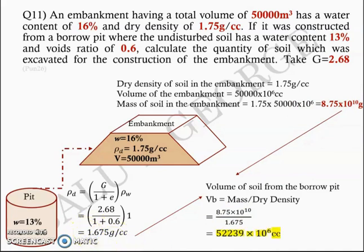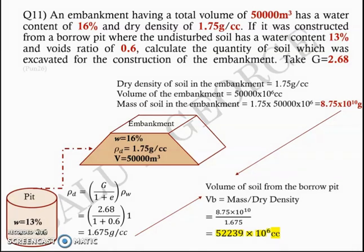This gives 52,239 × 10⁶ cm³ as the volume of soil to be excavated from the borrow pit. The key idea is: to calculate the quantity of soil to be excavated, use the dry density of the soil in the borrow pit and the mass of solid soil required for the embankment. You cannot use the density of soil in the embankment — you must use the dry density of the borrow pit. Once you understand that concept, this problem becomes straightforward.